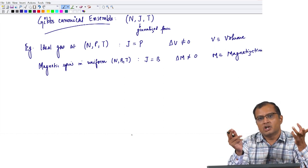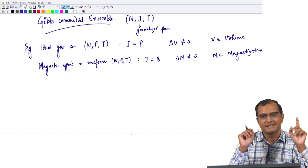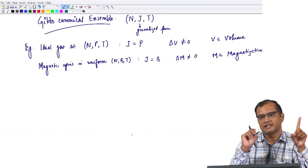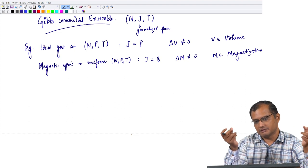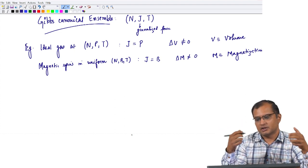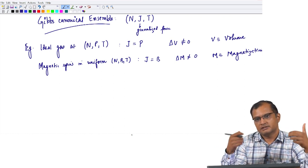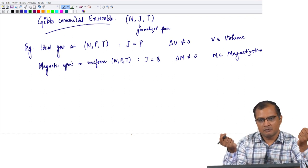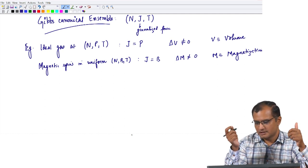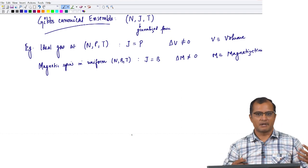Please note that both volume and magnetization are extensive variables, which means they scale with system size. If you want to keep the density constant and increase the number of particles by some factor lambda, you have to increase the volume by the same factor. The same applies to magnetization — a larger system will have larger magnetization.